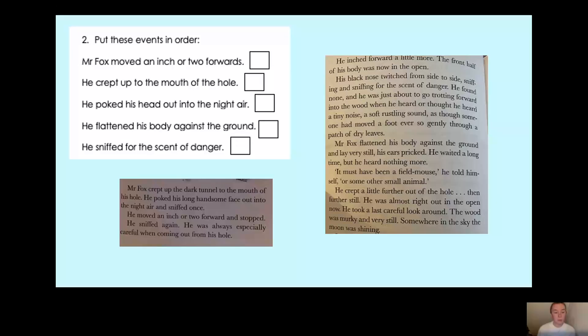So have we got anything about Mr. Fox crept up to the dark tunnel to the mouth of his hole? Oh, look, that's one of our sentences. It says he crept up to the mouth of the hole. So therefore, what number would we put in this box? Yes, we put number one. There we go. So we've done the first one.